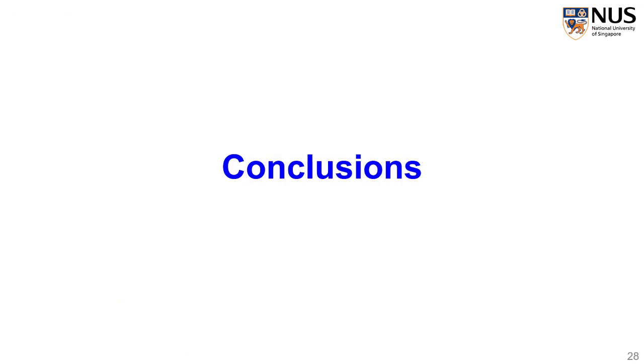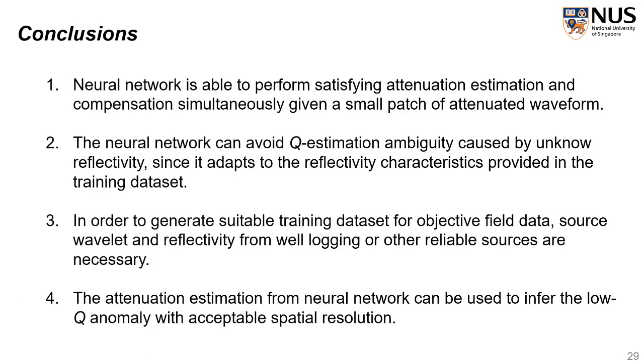Some conclusions. First of all, the neural network is able to perform satisfying attenuation estimation and compensation simultaneously, given just a small patch of the attenuated waveform. Secondly, the neural network can avoid Q estimation ambiguity caused by unknown reflectivity, since it adapts to the reflectivity characteristics provided in the training dataset. Third, in order to generate such suitable training dataset for an objective field data, source wavelet and the reflectivity information from well logging or other reliable sources are also necessary. And finally, the attenuation estimation from neural network can be used to infer the low-Q anomaly with acceptable spatial resolution.